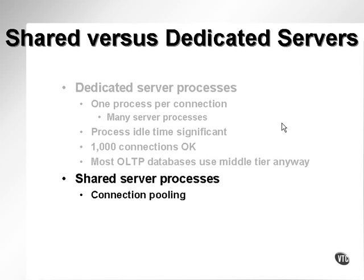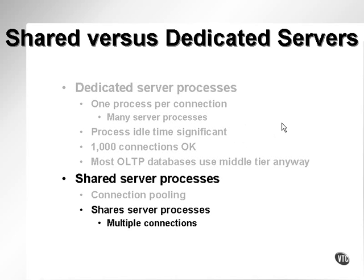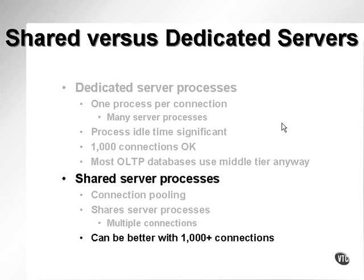Shared server processes can utilize connection pooling. Connection pooling is a process of allowing large numbers of users to share a smaller number of shared server processes on a database, or any server for that matter. Shared server processes allow huge numbers of connections, and generally performance will increase when connections to a database are in excess of a thousand, as opposed to dedicated servers which go up to about a thousand. Oracle documentation in the past listed shared servers, or what used to be called multi-threaded server environments, as implementable in terms of better performance when the number of concurrent connections was in excess of about four or five hundred connections.